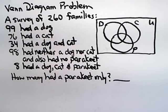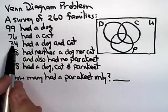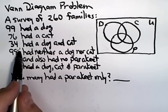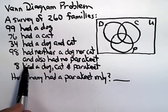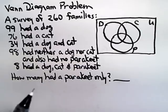In a survey of 260 families, we find out that 99 had a dog, 76 had a cat, 34 had a dog and a cat, 98 had neither a dog nor a cat and they also had no parakeet.